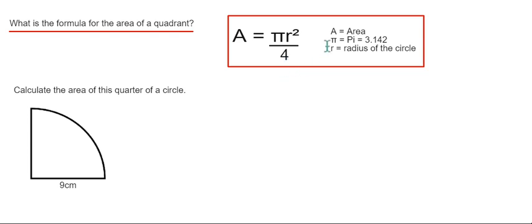Where A stands for the area, this symbol here is pi which is the number 3.142, and r is the radius of the full circle.